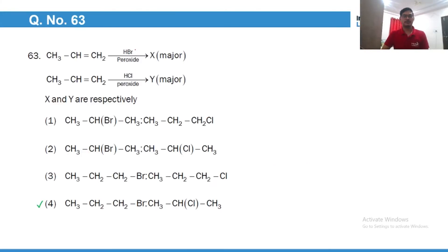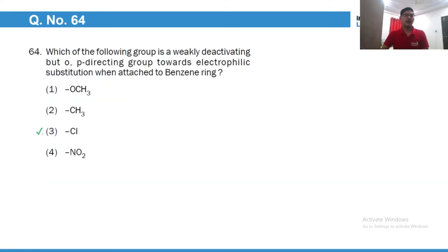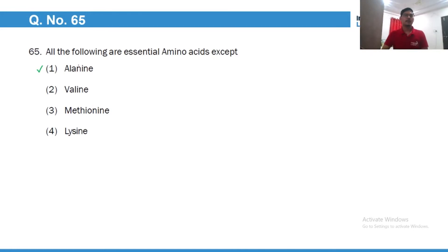HBr peroxide, so anti-Markovnikov addition, it will give you CH3 CH2 CH2 Br, and peroxide does not work in case of HCl, it works only in case of HBr. So in case of HCl it will be normal Markovnikov addition and this would be the major product. Halogens are weakly deactivating but ortho-para directing because of the lone pair. Alanine is not an essential amino acid. All the following are essential amino acids except, so valine, methionine and lysine they are essential.